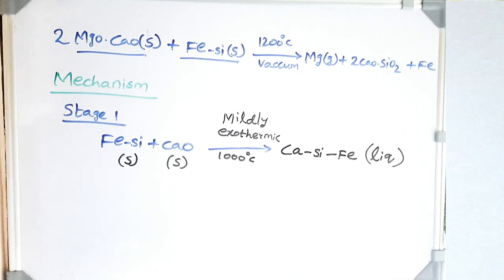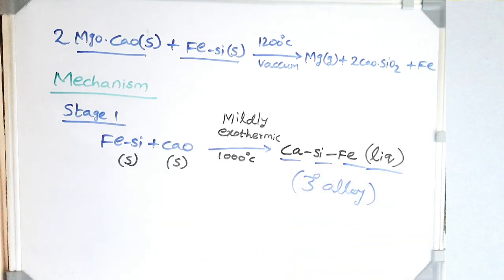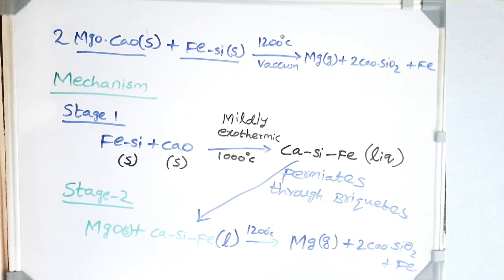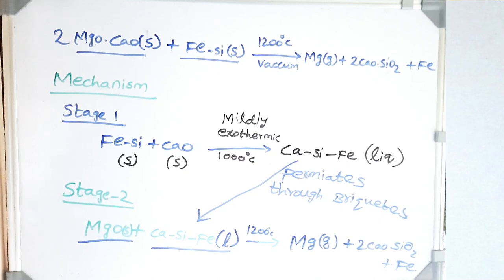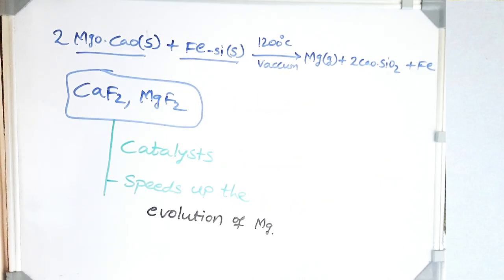At around 1000°C, ferro-silicon reacts with lime to produce a calcium–silicon–iron ternary alloy, which is liquid. Two solids react to produce a liquid, which becomes our main reducing agent. This ternary alloy permeates through the briquette and forms a metallic network. Now it is no longer a solid–solid reaction but a solid–liquid reaction, which proceeds quickly. Due to high magnesium vapor generation, pressure builds up inside the briquette, so further magnesium generation depends on magnesium escaping. Catalysts CaF₂ and MgF₂ speed up the evacuation of magnesium vapor.